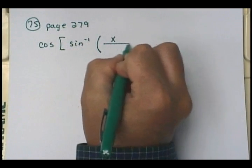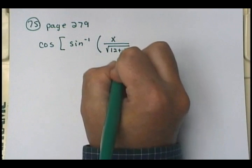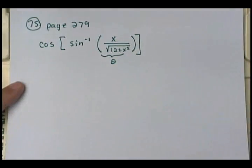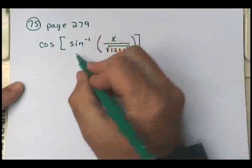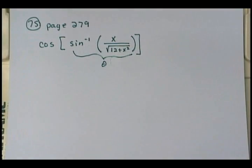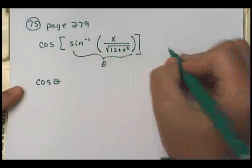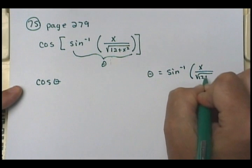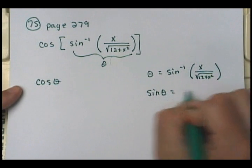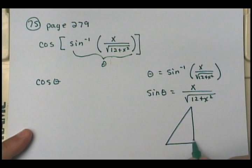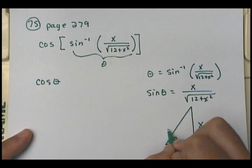We've got the cosine of the inverse sine of x over the square root of 12 plus x squared. I'm going to let all of this — the inverse sine expression — be theta. So I'm looking for the cosine of theta. Over here, theta equals the inverse sine of x over square root of 12 plus x squared, so the sine of theta has to equal x over square root of 12 plus x squared. If we draw our triangle, sine is opposite over hypotenuse.